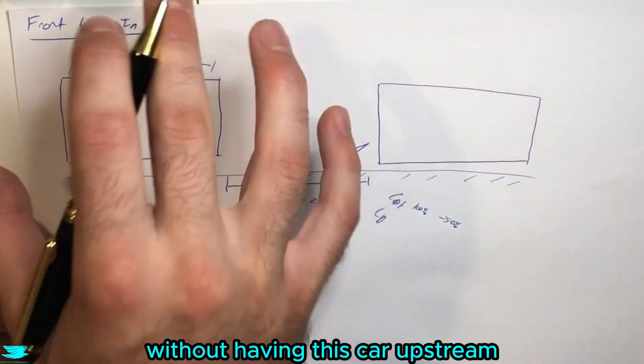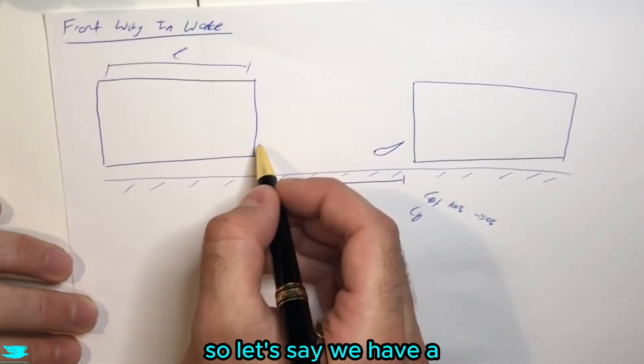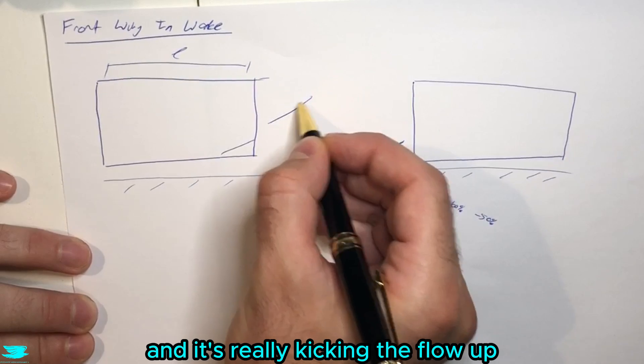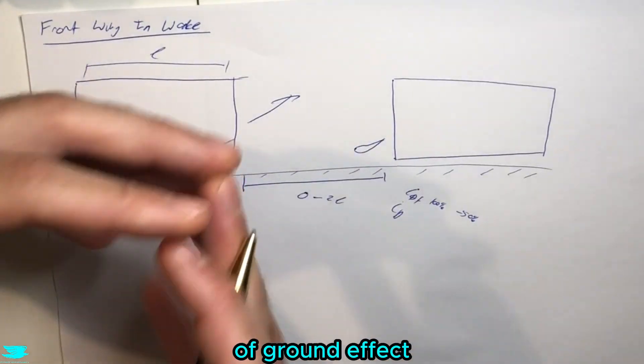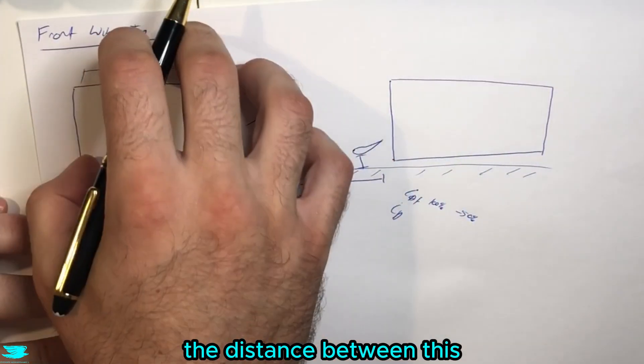Now what about if we have a more aggressive setup? Let's say we have a really aggressive diffuser and a wing here, and it's really kicking the flow up. That then exaggerates the effects of ground effect.